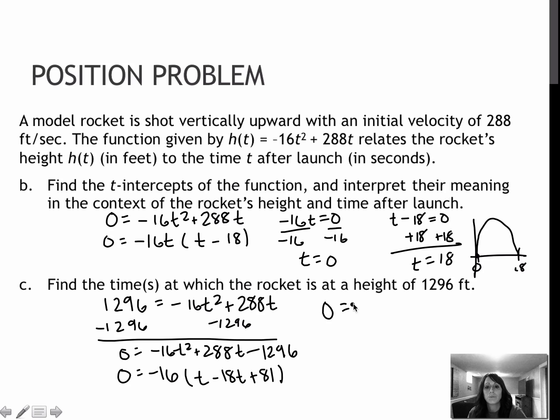That factors into t minus 9 twice. So I can write that as quantity squared or (t minus 9)(t minus 9). I know both of these values will give me the same answer. And that same answer that they give me is 9, which means at 9 seconds, the rocket is at a height of 1296. Now because I got the same answer twice, that means here at 9 seconds, that's the top where it starts to come back down to earth.